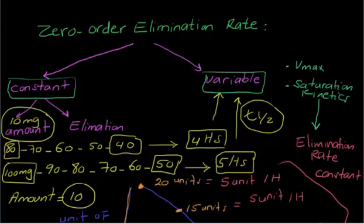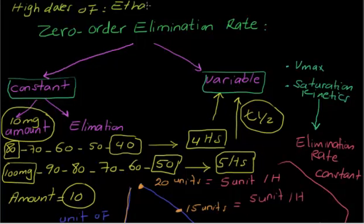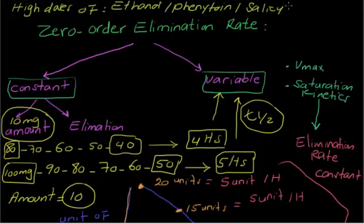Finally, there are three main examples of zero order kinetics — these occur usually at high or toxic doses: ethanol at high toxic doses, phenytoin at high toxic doses, and salicylate. These are the only drugs working under zero order elimination at high or toxic doses.